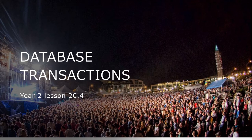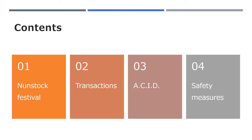Welcome back. In this last lesson in our database series we will look at database transactions. I'll use an imaginary example of a music festival as the context for looking at what transactions are, the checklist for good transaction processing which has the acronym ACID, and a number of safety measures we can use with databases to ensure that the data and the transactions are protected.